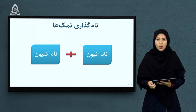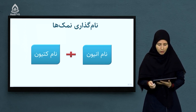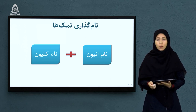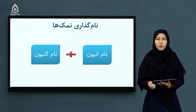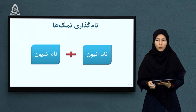تا اینجا شاگردان عزیز با تعاملات خنثی سازی آشنا شدید و ساختار نمک ها را با هم کار کردیم که چه قسمی نمک ها تشکیل می شوند. در ادامه می خواهیم با نامگذاری نمک ها با هم کار کنیم. برای نامگذاری نمک ها به طور کلی اول نام کتیون را می نویسیم و بعد نام انیون مورد نظر را می نویسیم.